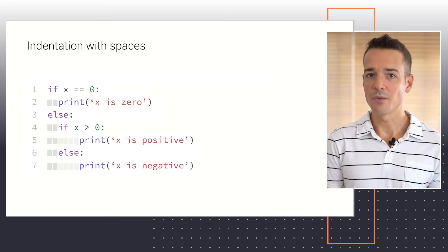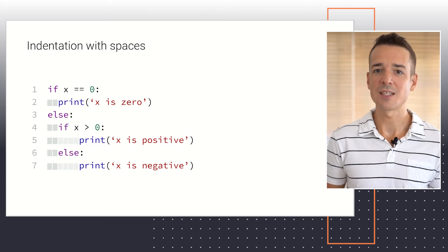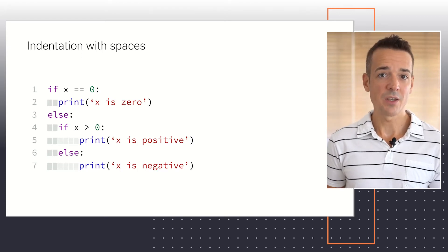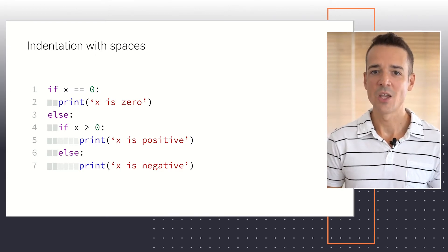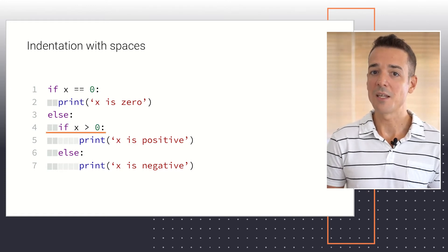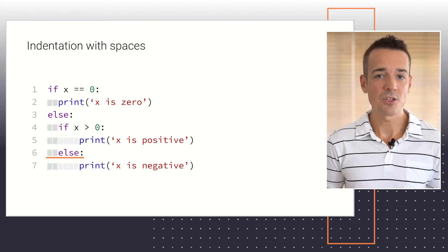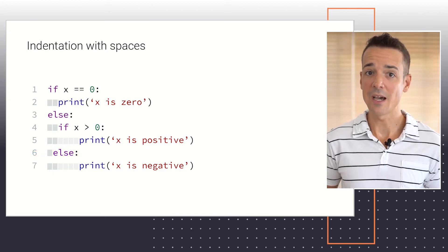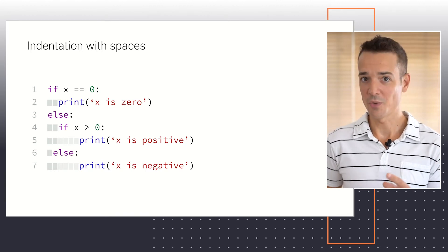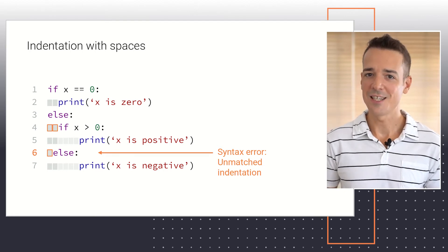Let me show you what I mean. Technically, you could express the previous code as follows. Here, we're using two spaces for the first level of indentation and four spaces for the second level. After you use a specific sequence of spaces for the first time, Python adopts that standard for the remaining code. So when it sees the if statement in line 4, prepended by two spaces, it knows that the else in line 6, which is also prepended by two spaces, is matched with that if. If Python detected a different number of spaces not encountered in a previous line of code — for example, just one space — a syntax error would occur. I encourage you to try this on the code editor and see it with your own eyes.